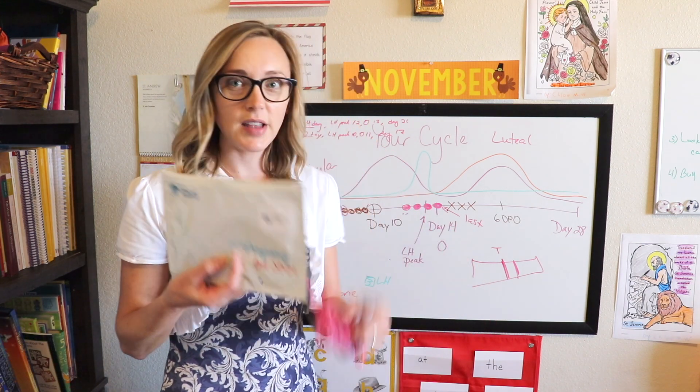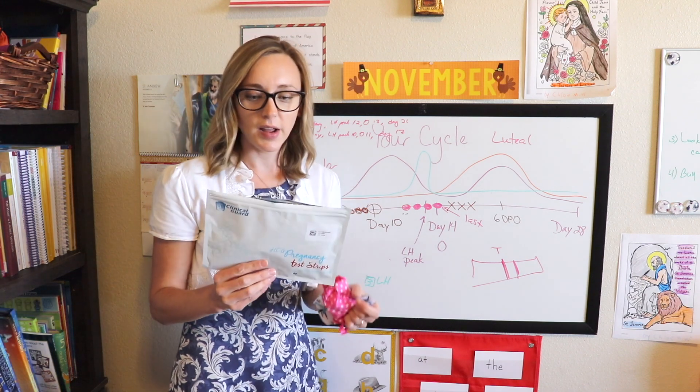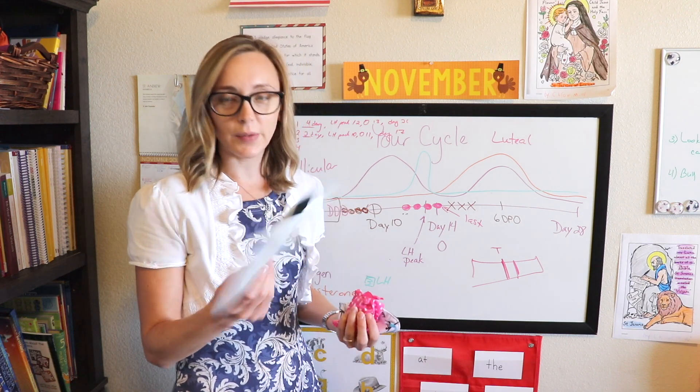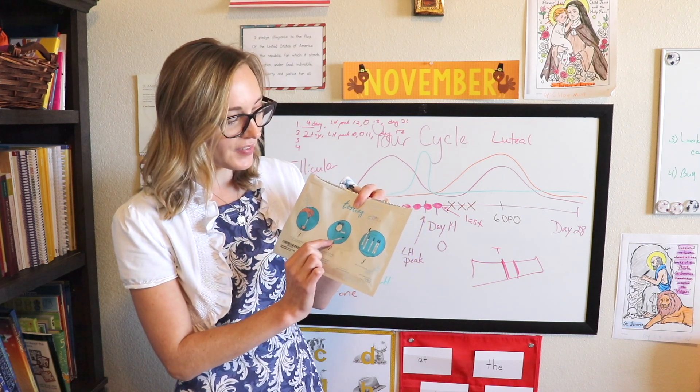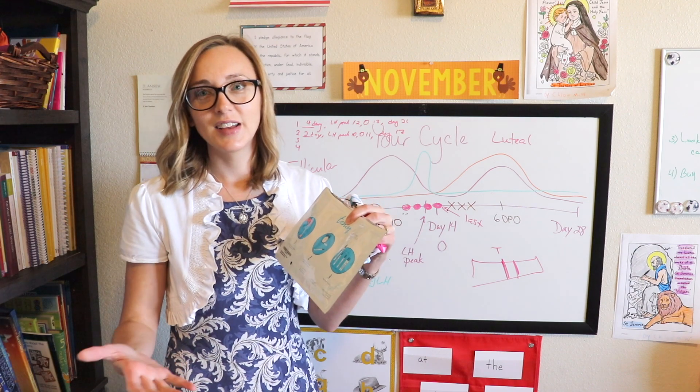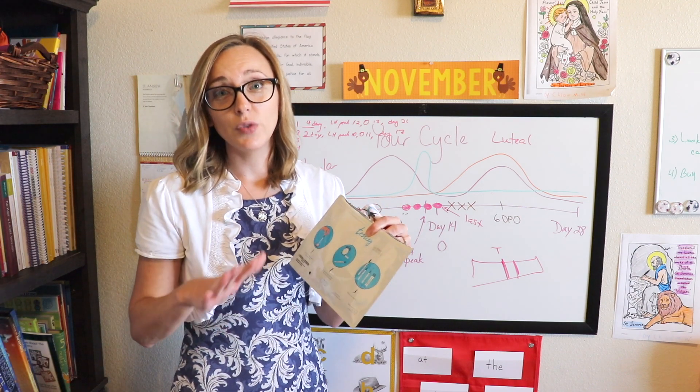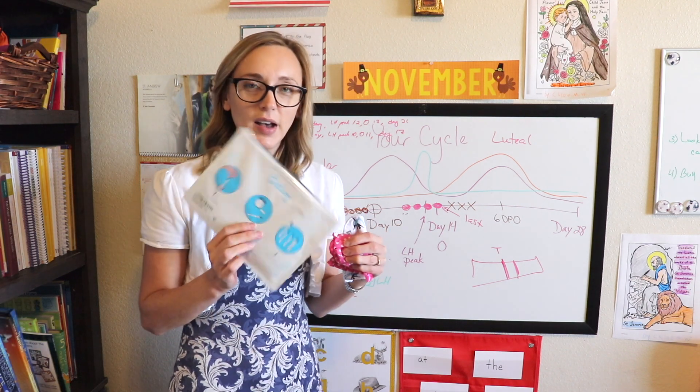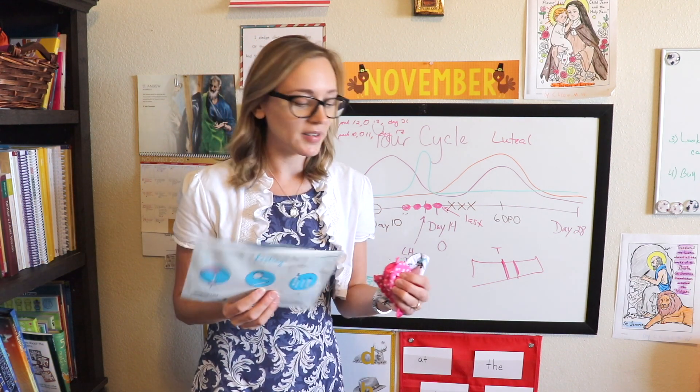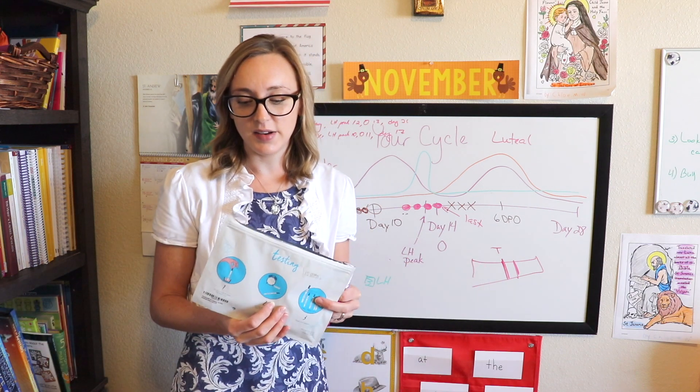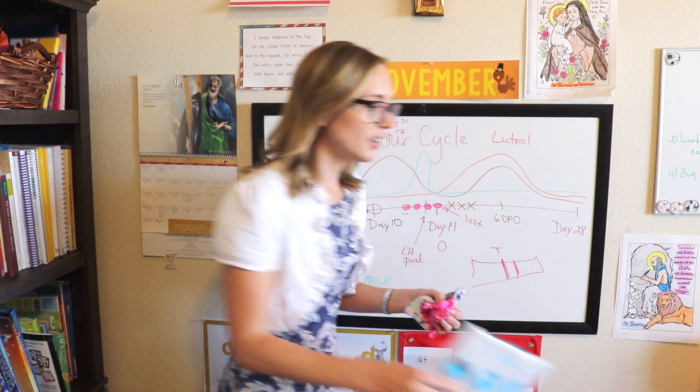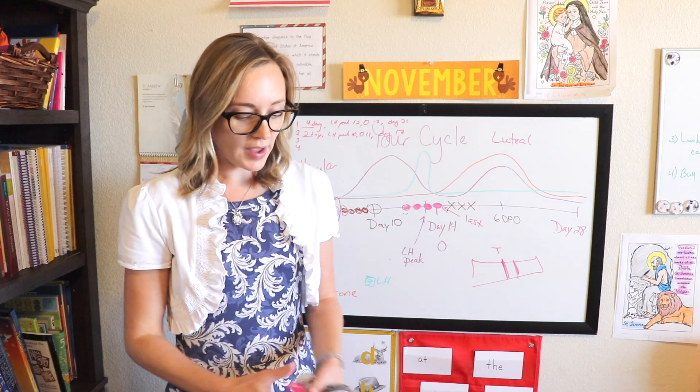So these are by the same company, the Clinical Guard and same exact deal. They're pregnancy tests. So you pee in a cup, put them in for three seconds, wait the five minutes. And of course, pregnancy test, if there's any kind of line, you are pregnant. You also want to check expiration dates on these things. If there's a faint line, you're pregnant and just take one again the next day or wait a couple of days, take another one. And it should continue to darken as the HCG build up in your system.